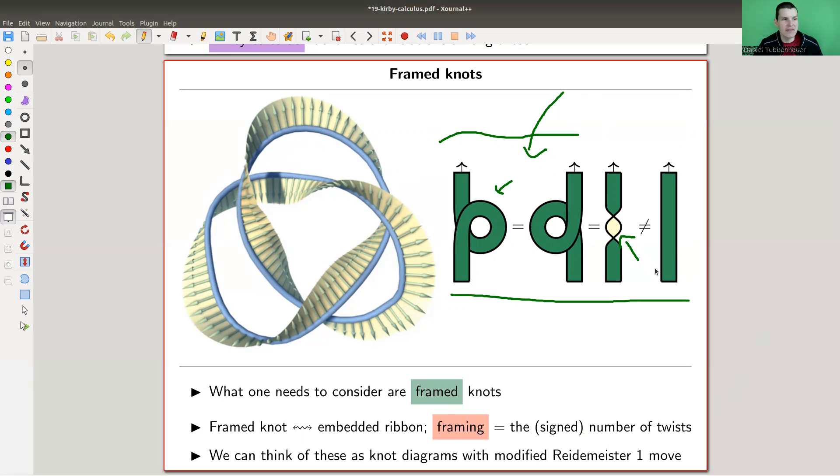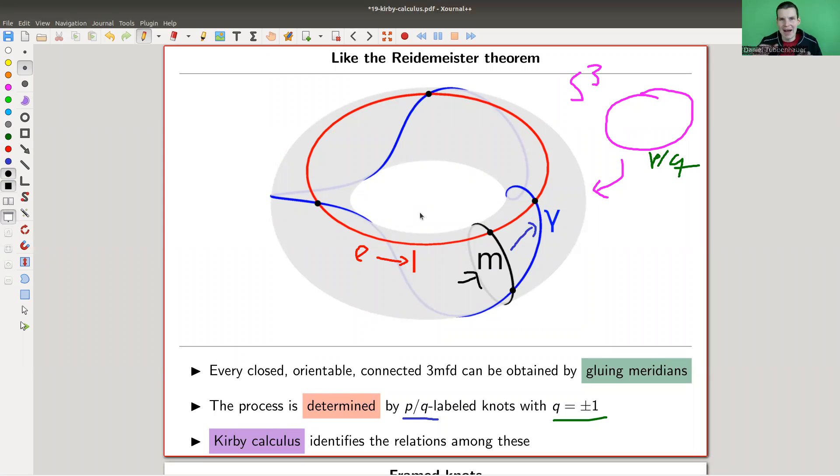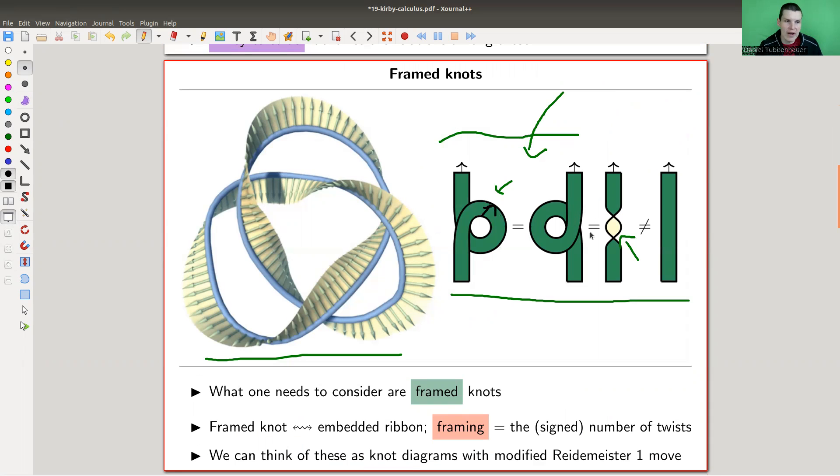And so this class of frame knots, essentially, they're ribbons, and we need to use those frame knots and not knots. And the framing is the number of twists. And the way you do it is you think of it as having a parallel curve. And there are some arrows pointing to that curve, which determined the framing. So this beast here is really a ribbon. And if you kind of pull it straight, you still have a little twist. So they behave slightly differently than knots. But it's kind of a technicality here. They have just the modified Reidemeister one move.